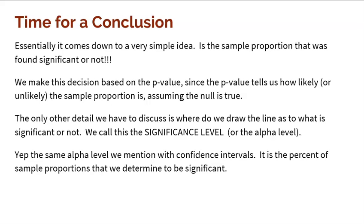We call this the significance level or the alpha level. Alpha is the percentage of samples that you deem to be significant. For example, if you're going to be 98% confident, that means the top 1% and the bottom 1% are very significant — 2% of samples are significant. That's your significance level, called the alpha level.